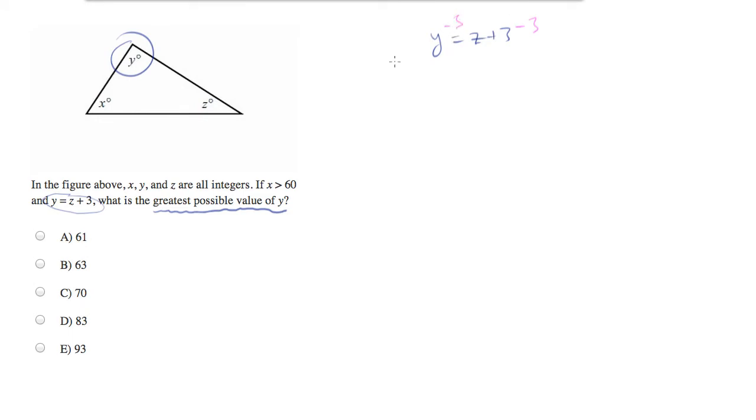I'm going to subtract 3 from both sides, such that I can say y minus 3 equals z. Now, I'm actually going to plug in for z. So z is equal to y minus 3.